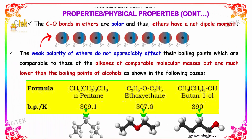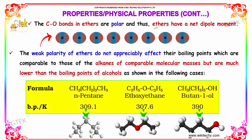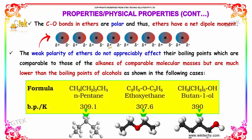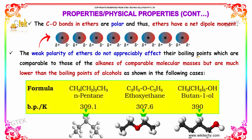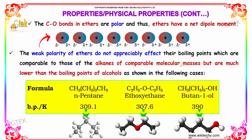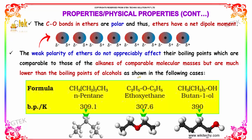The C–O bonds in ethers are polar, and thus ethers have a net dipole moment. However, the weak polarity of ethers does not appreciably affect their boiling points, which are comparable to those of alkenes of comparable molecular masses, but are much lower than the boiling points of alcohols, as shown in the following cases.